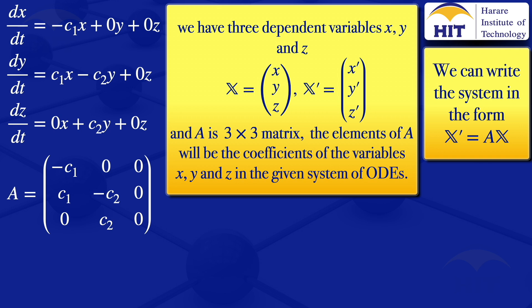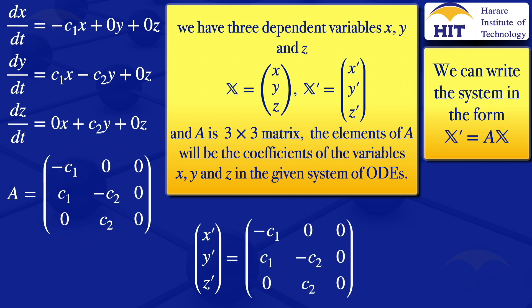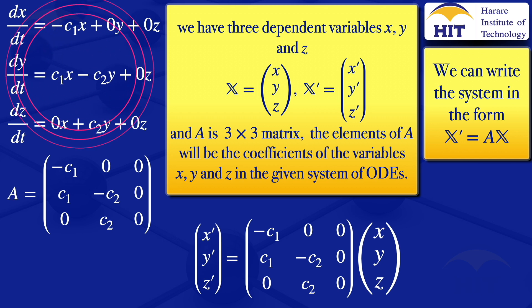We can now write the system in matrix form. X prime, Y prime, Z prime equals matrix A — minus C1, 0, 0; C1, minus C2, 0; 0, C2, 0 — multiplied by the column matrix X, Y, Z. That's the matrix form of this system of ODEs.